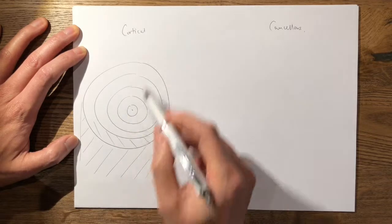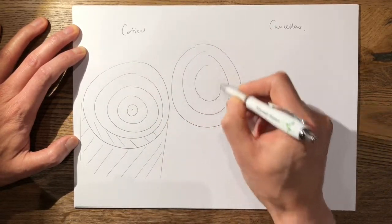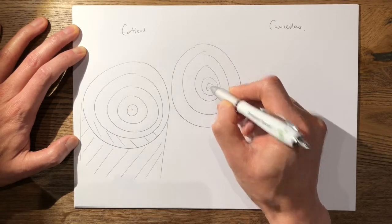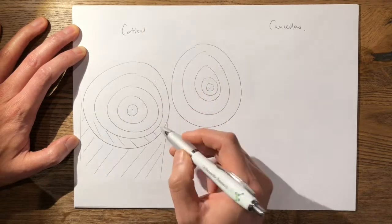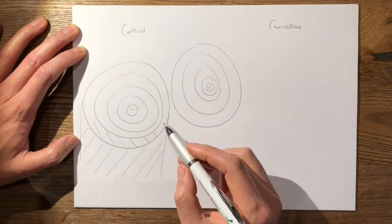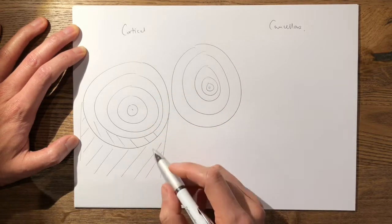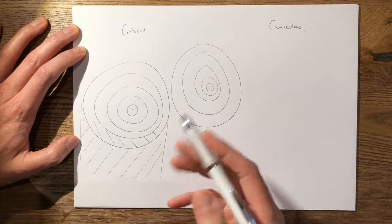These osteons are side by side, and the outermost ring is what we call the cement line. The cement line is an area of weakness where fractures can propagate because the cement line is where no collagen fibers cross, so it represents an area of weakness.